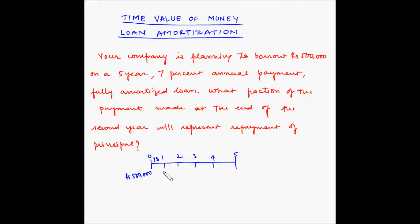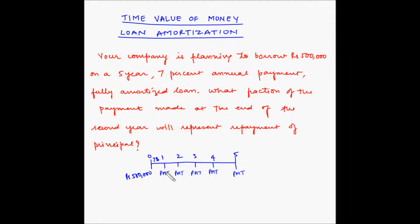Let's say the amount of installment being repaid is PMT, representing the payment. We are being asked what fraction of the payment made at the end of the second year represents repayment of principal. These payments are made at the end of each year — the first payment at the end of year one, the second at the end of year two, and so on. This payment made at the end of the second year will comprise both interest and principal.